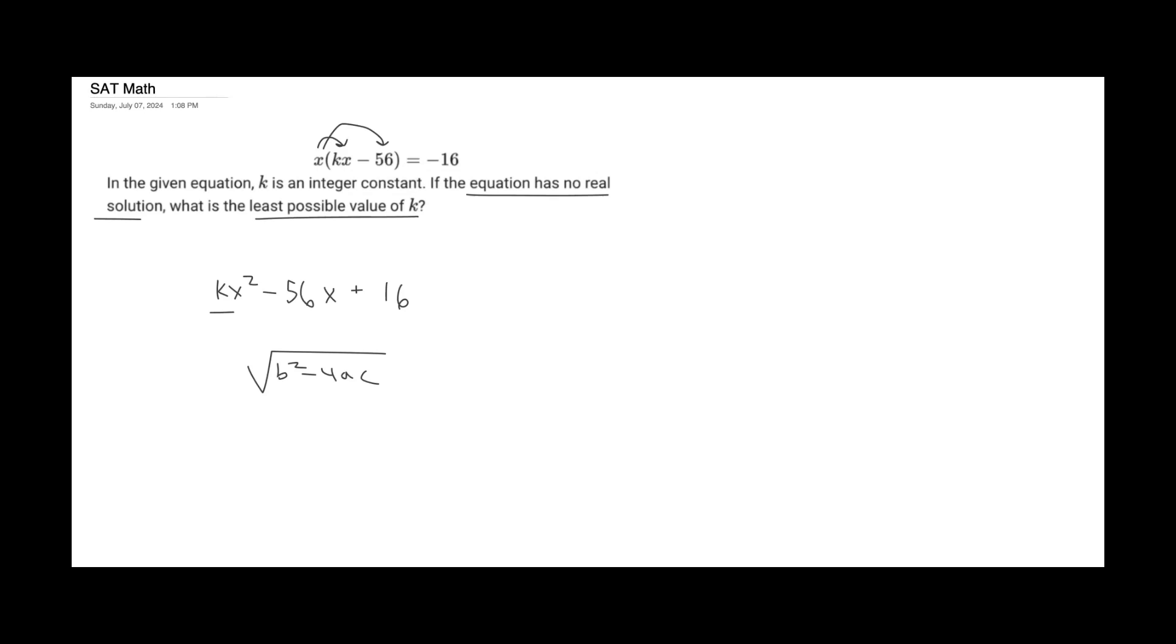Therefore, now that we have the values, we should just plug it in. So in our case, we know what b is. Our b value is negative 56. So negative 56 squared.